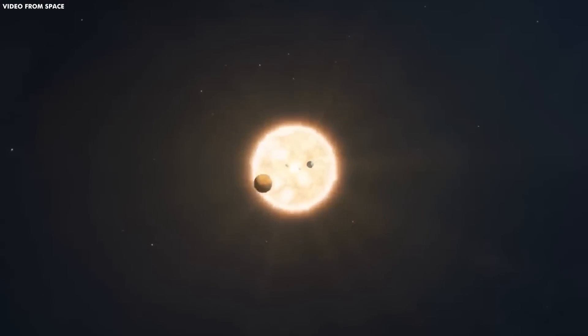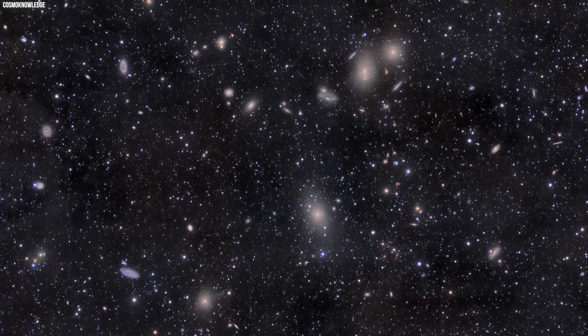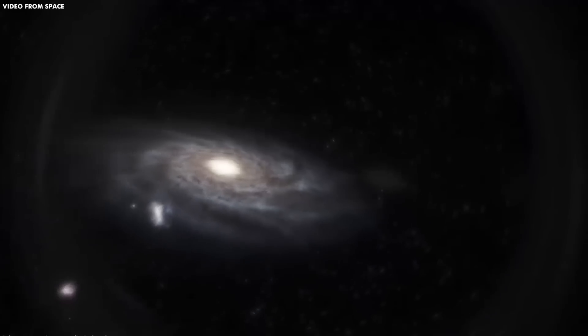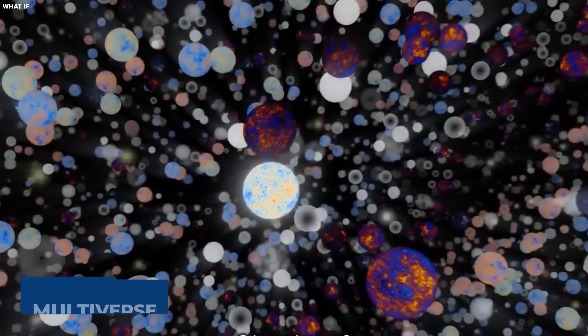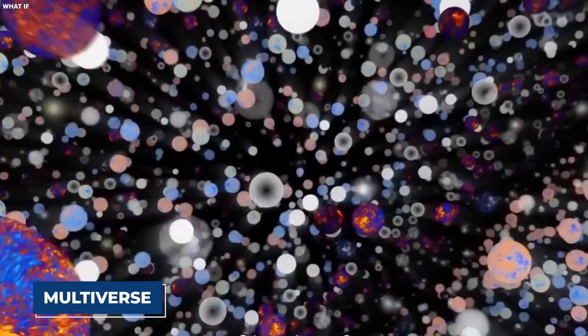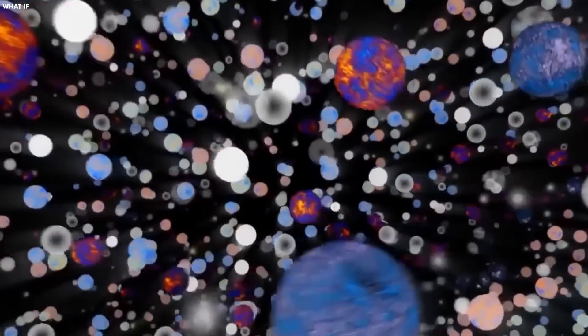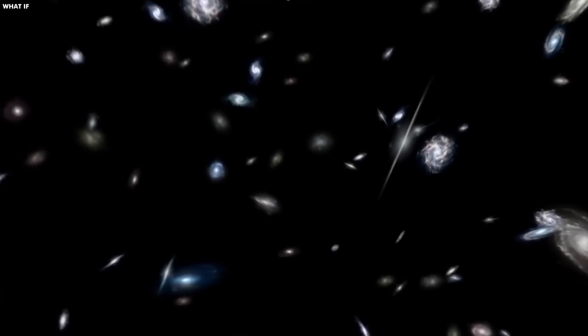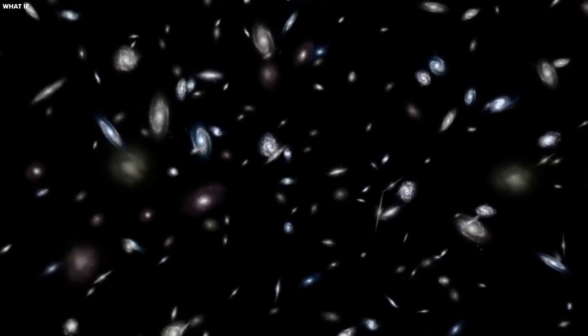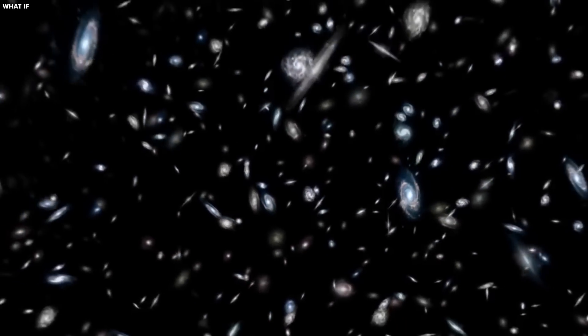The idea is that our universe, with all of its galaxies, stars, and planets, is just one tiny component in a larger structure. This structure, known as a multiverse, would be made up of an infinite number of universes all existing in their own separate dimensions. According to multiverse theory, our universe, with its hundreds of billions of galaxies and nearly countless stars spanning tens of billions of light years, may not be the only one.